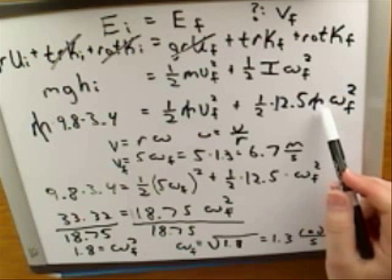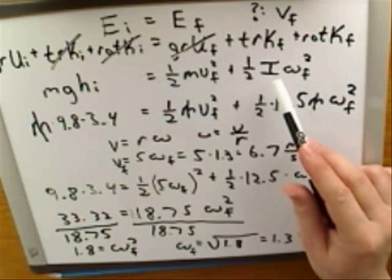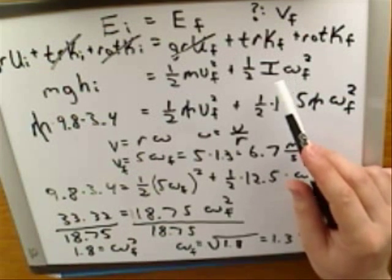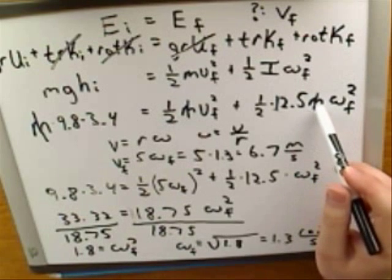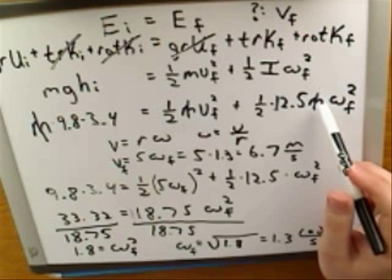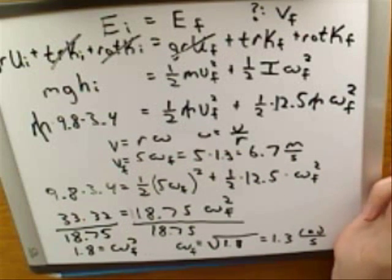And in order for that to cancel out, we had to be able to plug in for I. Remember that here we were told the shape of the object. It was a solid cylinder, so we have to use the table in the book to find I. And that was what allowed us to put an M term in here. Remember, you can only cancel the M when the M appears in every single term. So once we plugged in for I, we had M in every single term.